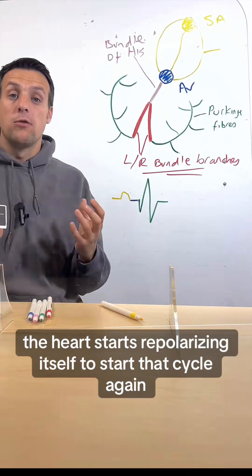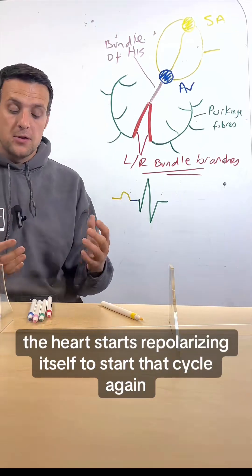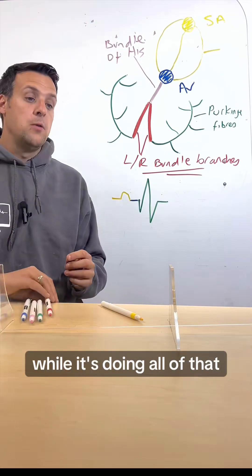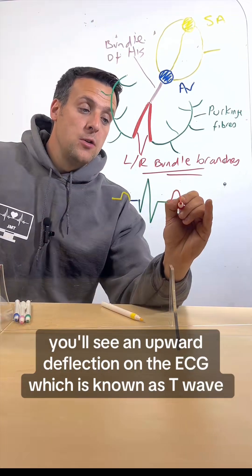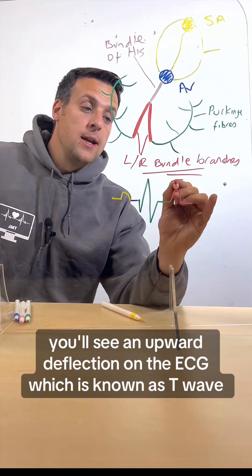Once it's done all that the heart starts to repolarize itself to start that cycle again. While it's doing all of that you'll see an upward deflection on the ECG which is known as T wave.